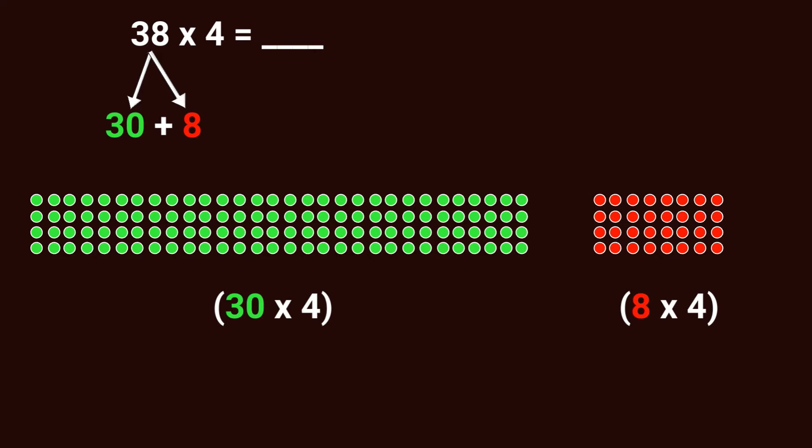Now we have our 30 groups of 4 and our 8 groups of 4. If we find the total of each part, we see 30 groups of 4 is 120 and 8 groups of 4 is 32. So if we add those back together, we get a total of 152. So 38 times 4 is 152, and we use the distributive property to split that apart, find partial products, and add them back together.